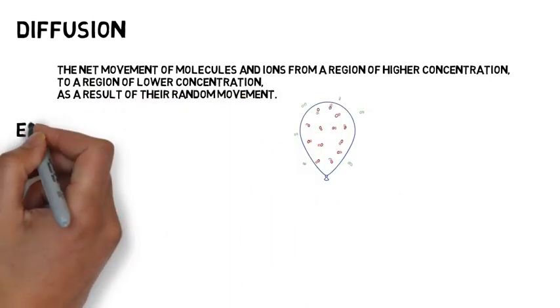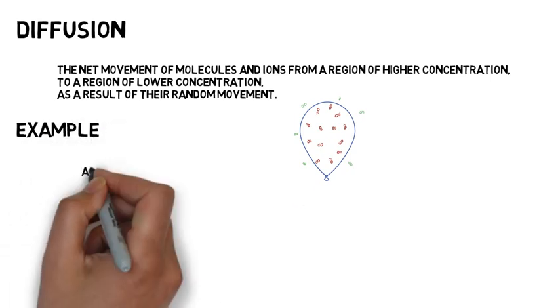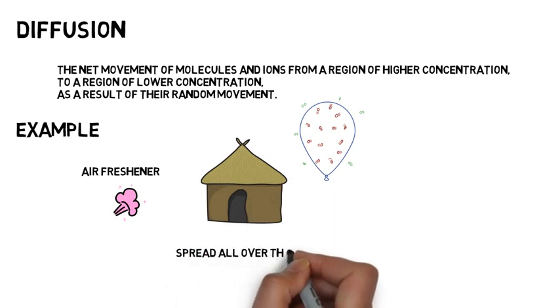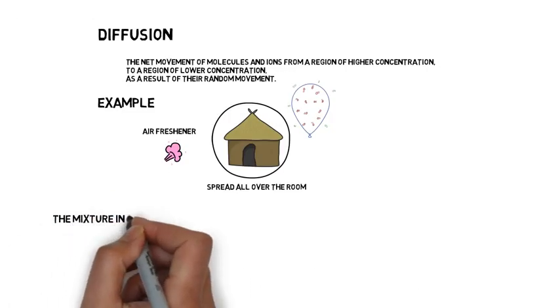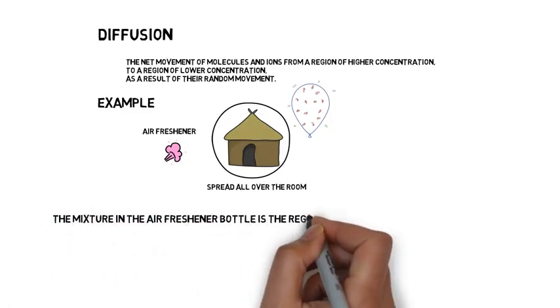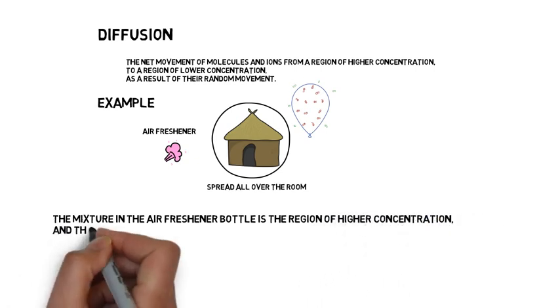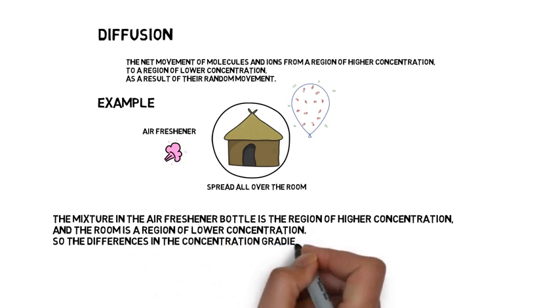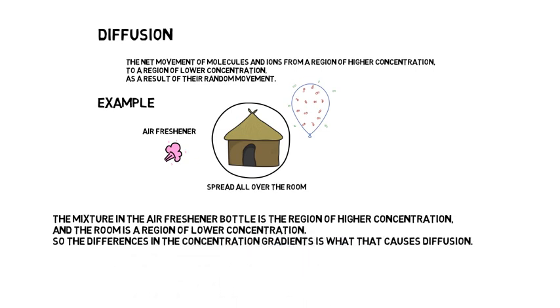Let us consider an example. You are spraying an air freshener in the air and soon you realize that the scent has spread all over the room. The mixture in the air freshener bottle is a region of higher concentration and the room is a region of lower concentration. So the differences in the concentration gradients is what causes diffusion.